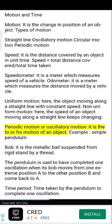Periodic motion or oscillatory motion, it is the to and fro motion of an object. Example: simple pendulum. Bob, it is the metallic ball suspended from rigid stand by a thread.